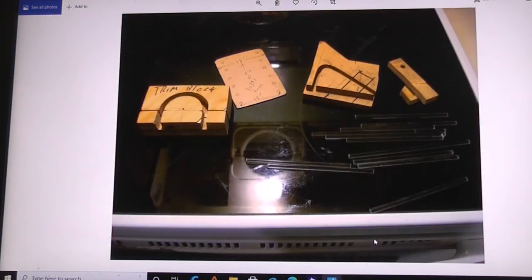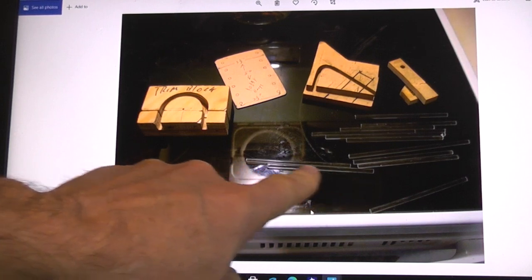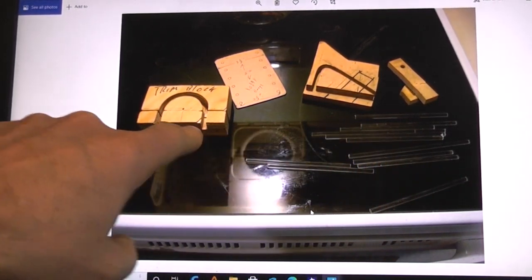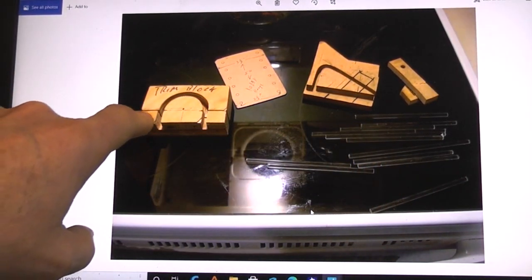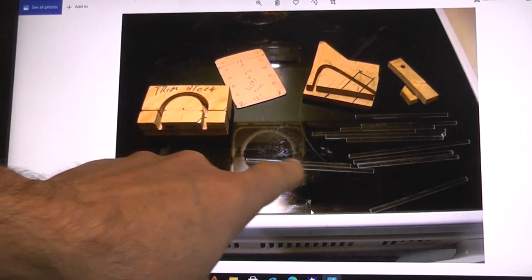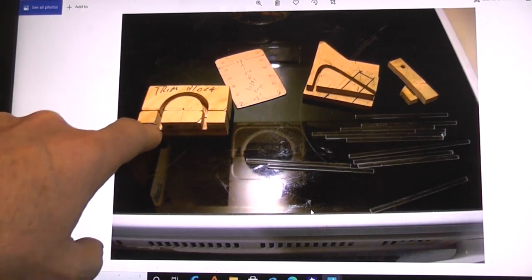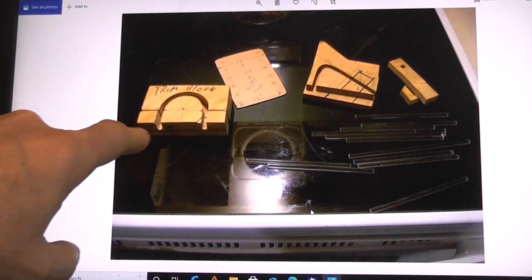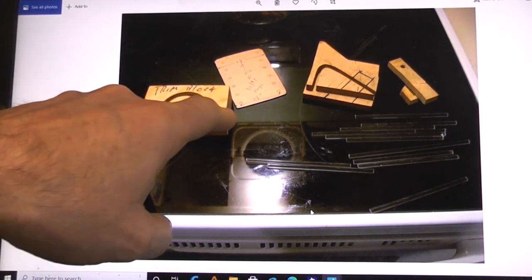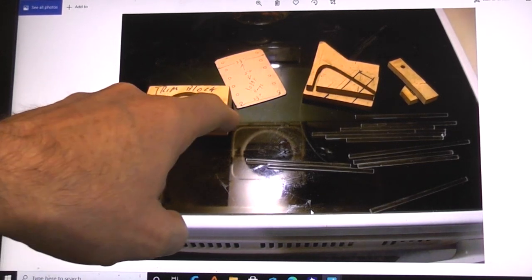I started with some short sections of quarter inch rod. Built myself a little trim block where when I heat these up in the toaster oven I can then lay them in here. This is actually deep enough but I can lay three in at a time.